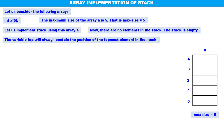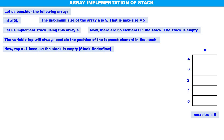This is important: the variable top will always contain the position of the topmost element in the stack. Now there are no elements in the stack, therefore there is no topmost element. Therefore top is equal to minus one. Top equals minus one because the stack is empty, and this is also called stack underflow. When the stack is empty, the value of top is minus one.